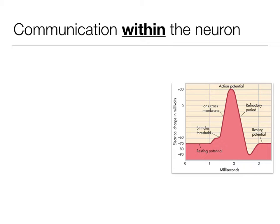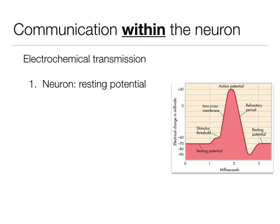Communication within the neuron is all happening in an electrochemical transmission. When sensations of the outside world are transmitted, this is done through the sensory receptors into the neurons so that those neurons can communicate with the brain and the rest of the body. A neuron starts out with resting potential. If you look at this graph, that's the beginning. There's also a nice graph of this in your book on page 11, figure 1-4, that has this action potential graph.